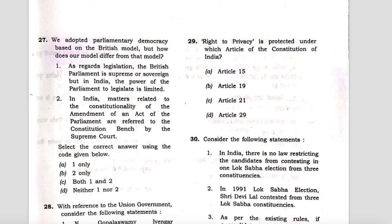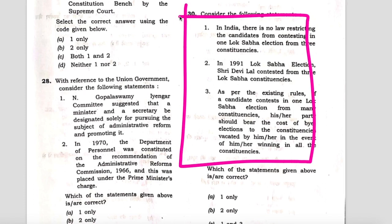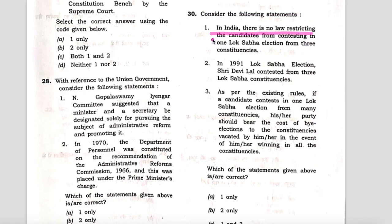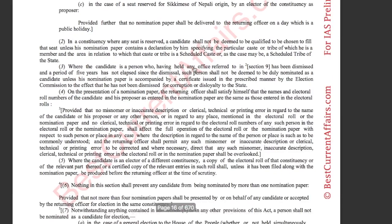The next question: consider the following statements. Statement one is that in India there is no law restricting candidates from contesting a Lok Sabha election from three constituencies. This statement is wrong because there is a law called the Representation of People's Act 1951. In this course for IAS Prelims 2021, we have given candidates a collection of important laws and legislations in the form of a PDF.